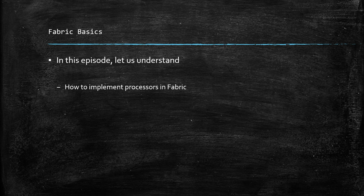Fabric receives that processed response from the post processor and sends it back to the front-end application. This is essentially what we do as part of preprocessors and post processors. Let us now look at an example for understanding this in detail.